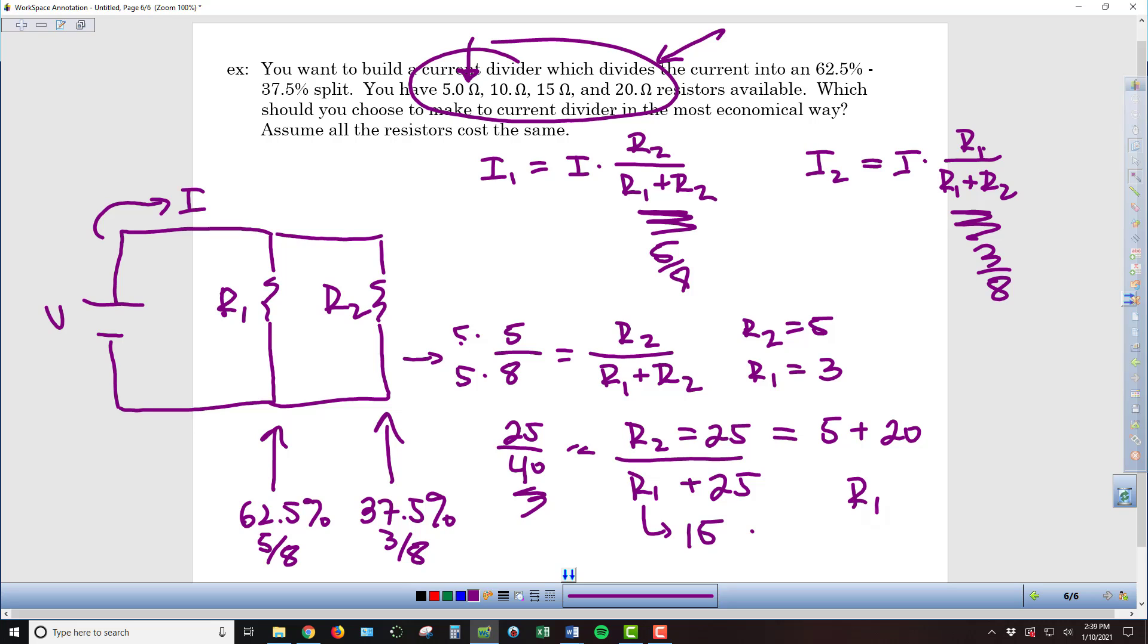So R1, in this case, will just be a 15 ohm resistor. And then R2 could be made up as a 5 and a 20 or a 10 and a 15. If we wanted more resistors, we could do a series of 5s, whatever it is. But I think the most efficient would be to say that it will be a 20 ohm and a 5 ohm resistor.